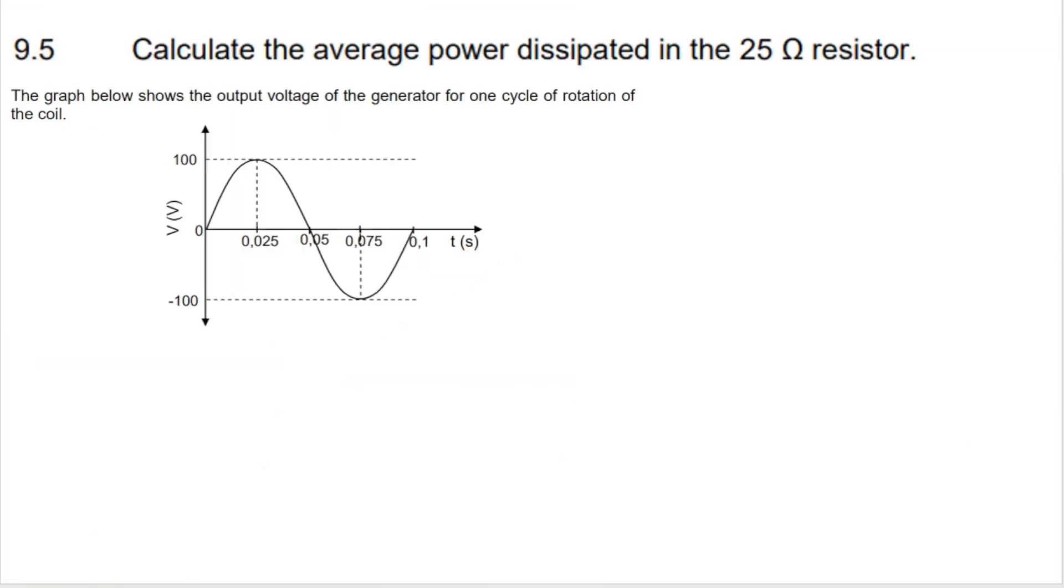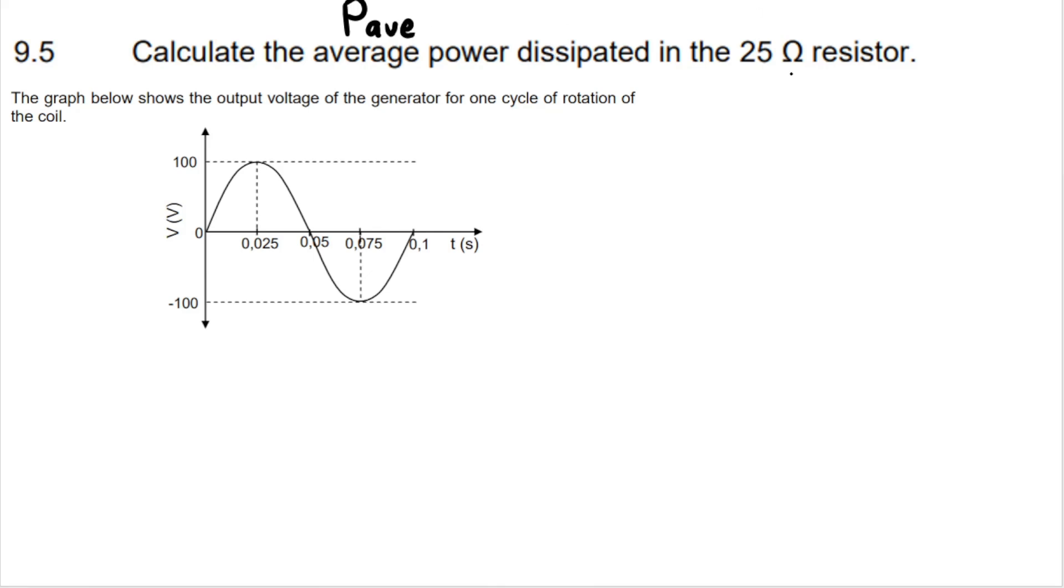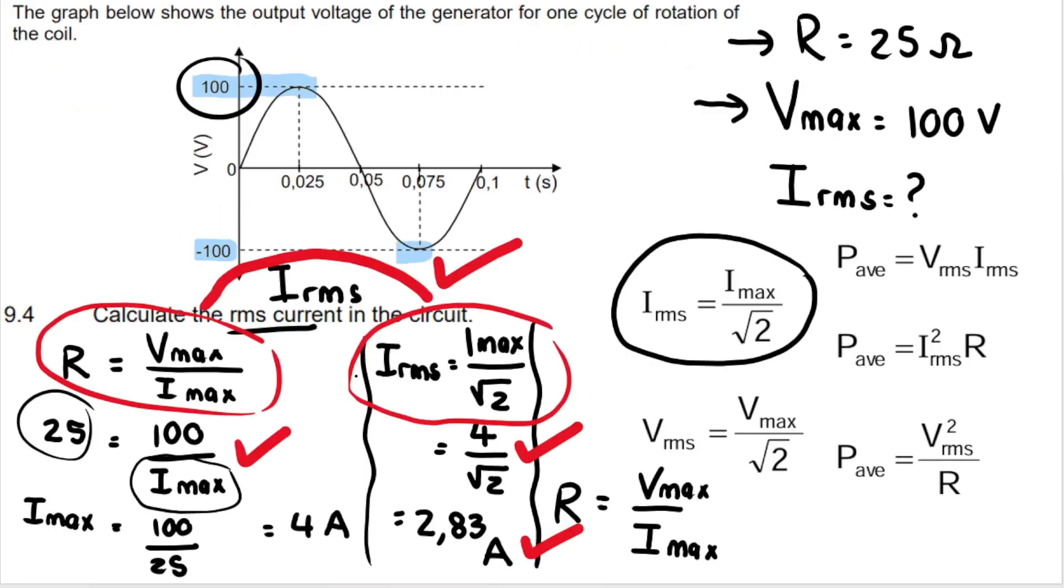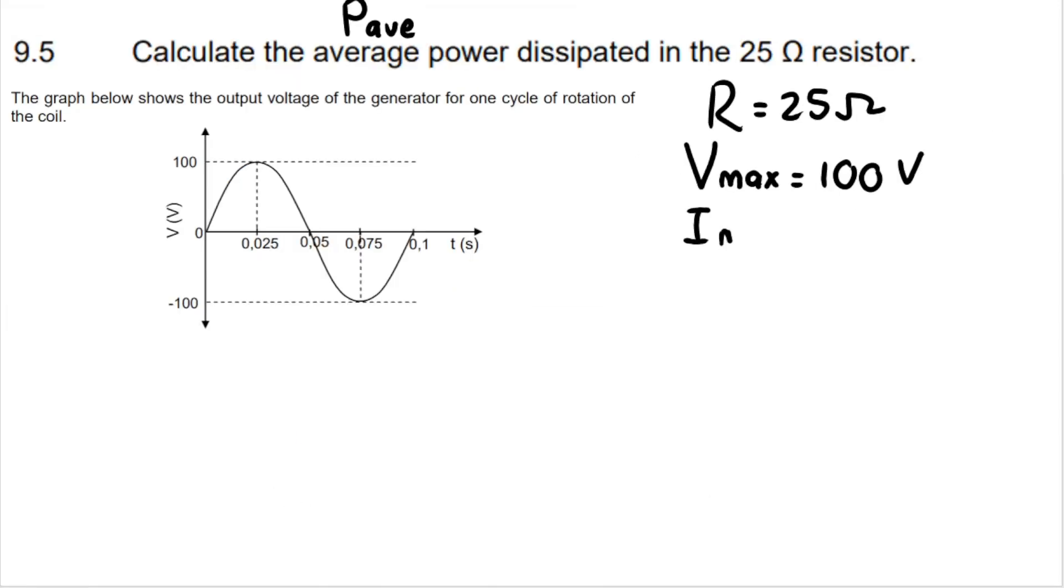My next question says calculate the average power. Remember that is Paverage, Pav, dissipated in the 25 ohm resistor. So so far we have that resistance is 25 ohms. We have that Vmax, maximum voltage, peak voltage is 100 volts. In our previous question, we also calculated that Imax was four amperes. So I can use that over here. Imax is four amperes. And we also have Irms. We calculated that as well. That was our final answer, 2.83 amperes.